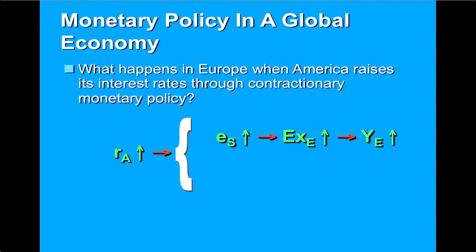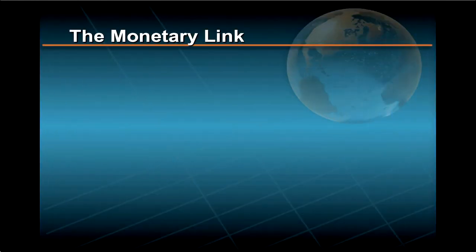Note, however, there is an important offsetting effect. In particular, higher interest rates in America tend to raise European interest rates, RE. These higher rates tend to depress domestic investment in Europe, IE, and thereby lower Europe's output, YE, and employment. In other words, in its attempt to fight domestic inflation, the Federal Reserve of the United States has increased the chance that Europe will experience a recession. In some textbooks, this chain of events is referred to as the monetary link.